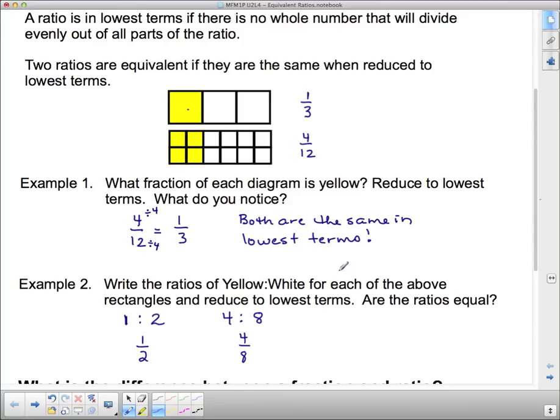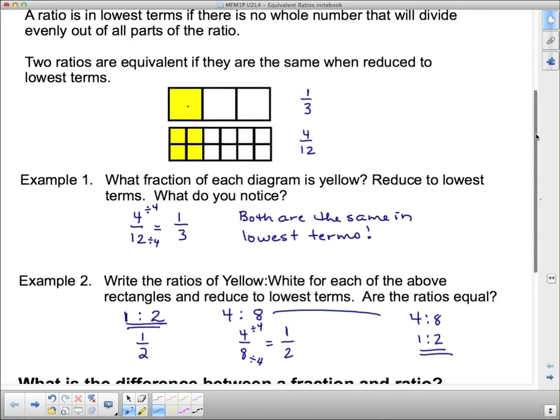Now, it has asked us to reduce these to lowest terms. Well, 1 half is already in lowest terms, or 1 to 2 is already in lowest terms. If I reduce this to lowest terms, I can divide both top and bottom by 4 again, which means this reduces to 1 to 2. And you could have done that with this ratio, too. If you saw 4 to 8, both of those divide by 4, so that you get 1 to 2. And you see that this and this are exactly the same thing. It doesn't matter which one comes from. It doesn't matter how many pieces I split that up to. If it's the same size, the ratios are equivalent.